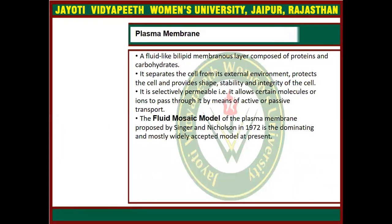The first organelle is the plasma membrane. The plasma membrane is the outermost layer in animals. But in plant cells or in some microbes, the cell wall is the outer membrane. The plasma membrane separates the external environment from the cell and it protects the cell cytoplasm.